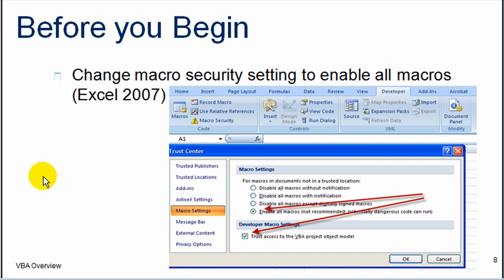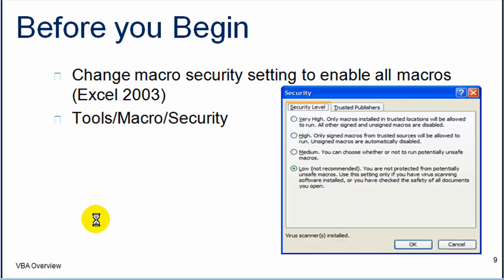I suggest that you try writing this function — I already showed you all the steps you need to complete it. If you are using Excel 2007, make sure you go to the Developer tab, select Macro Security, and select the last button, and also check this box. This will allow you to write macros. If you are using Excel 2003, then you are going to select the Security tab and select Low Security Setting. This will allow you to write the macros.